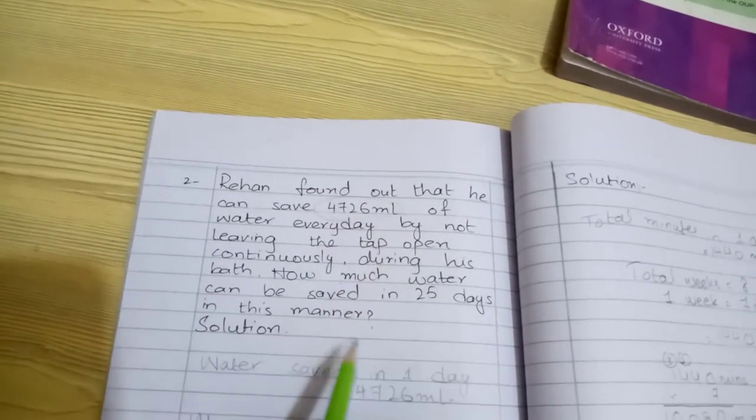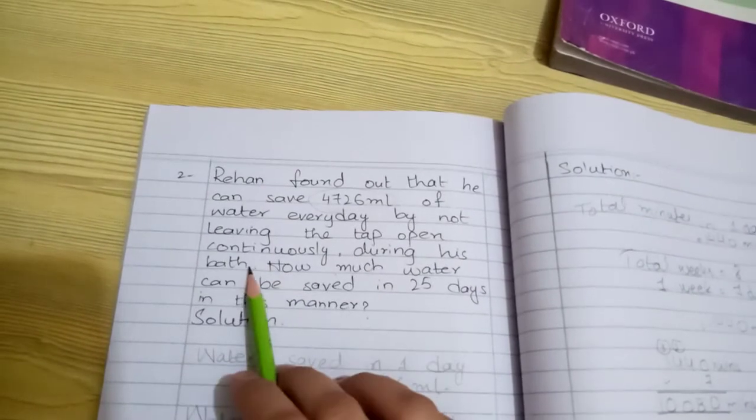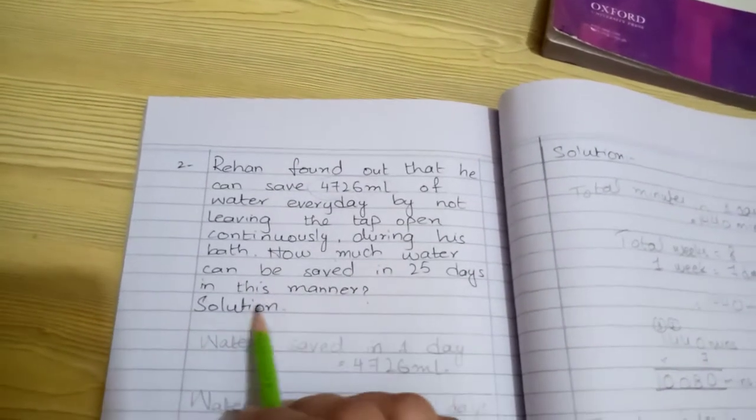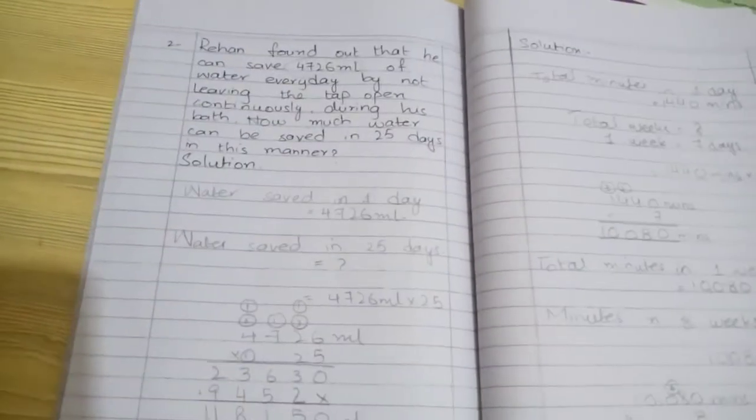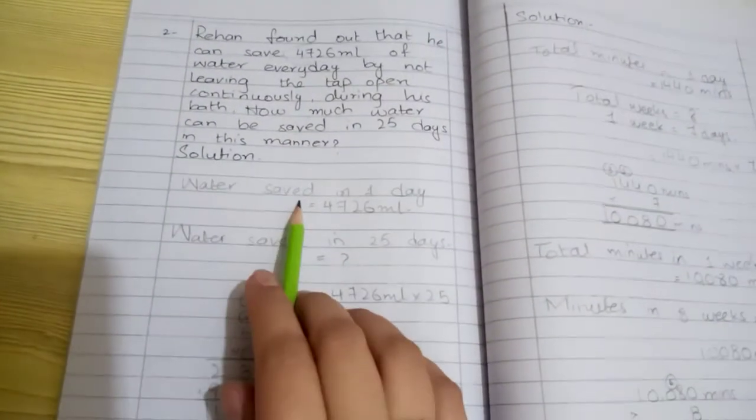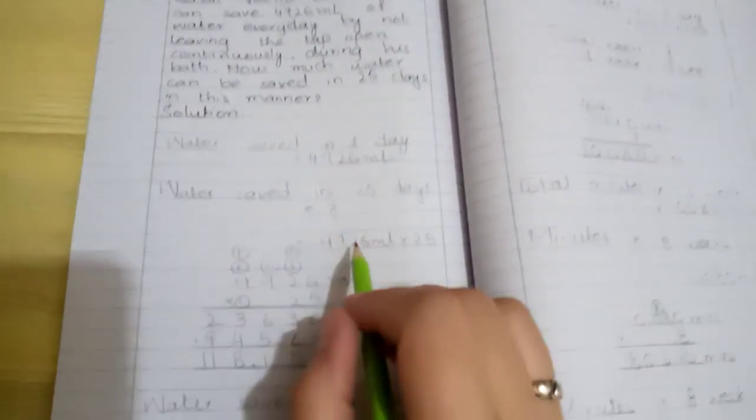How much water can be saved in 25 days in this manner? Water saved in one day is given. Water saved in 25 days we need to find.